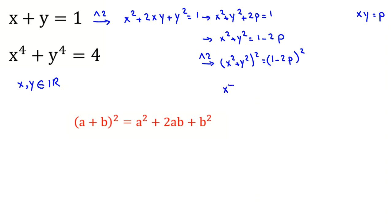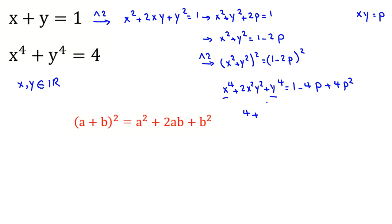So x squared plus y squared, all squared, equals 1 minus 2p squared. Expanding, it will be x to the 4 plus 2x squared y squared plus y to the 4 equal to 1 minus 4p plus 4p squared. So x to the 4 plus y to the 4 equals 4, and 2x squared y squared is 2p squared. So 4 plus 2p squared equals 1 minus 4p plus 4p squared.